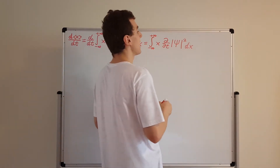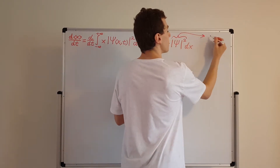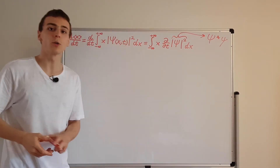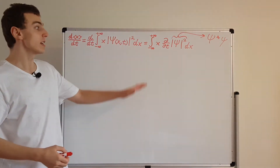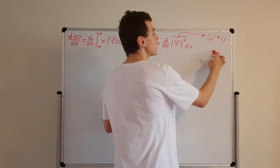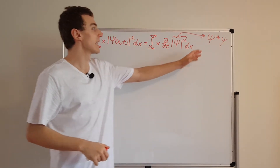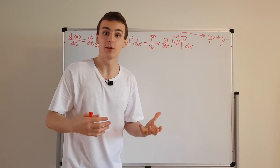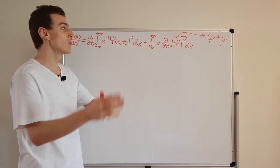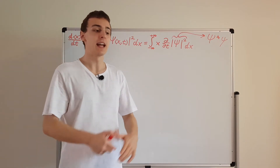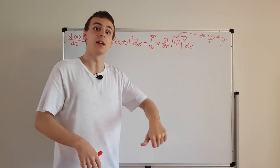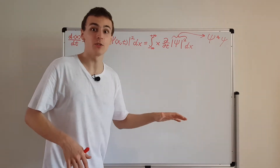We can see that the probability density is psi star times psi. In earlier videos — particularly the ones where we proved that normalization is preserved — we worked with a partial time derivative of psi star times psi. We expanded it using the product rule, substituted in the Schrödinger equation and its complex conjugate, and the term involving the potential cancelled out, leaving an interesting combination. We're going to use that expression from earlier videos and continue this derivation using it.